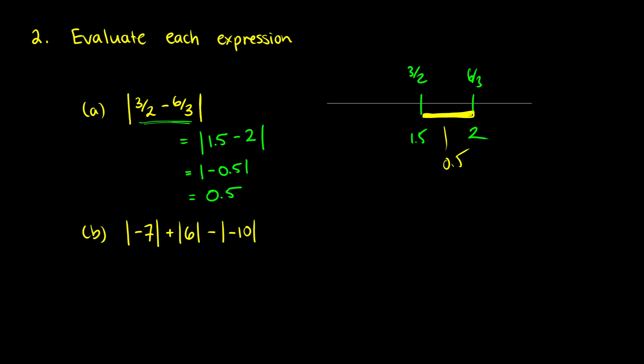So this one is going to be 7—that's the absolute value of negative 7—plus 6, which is the absolute value of 6, minus 10, which is the absolute value of negative 10. And then when we add these together, it's the same thing as 13 minus 10, and that just gives us 3.